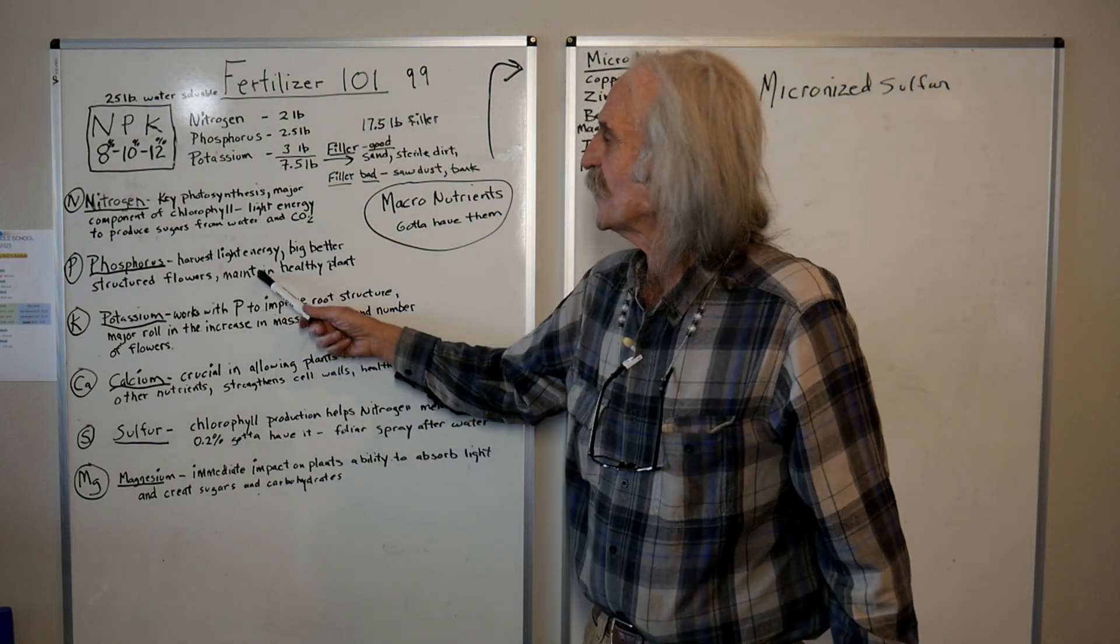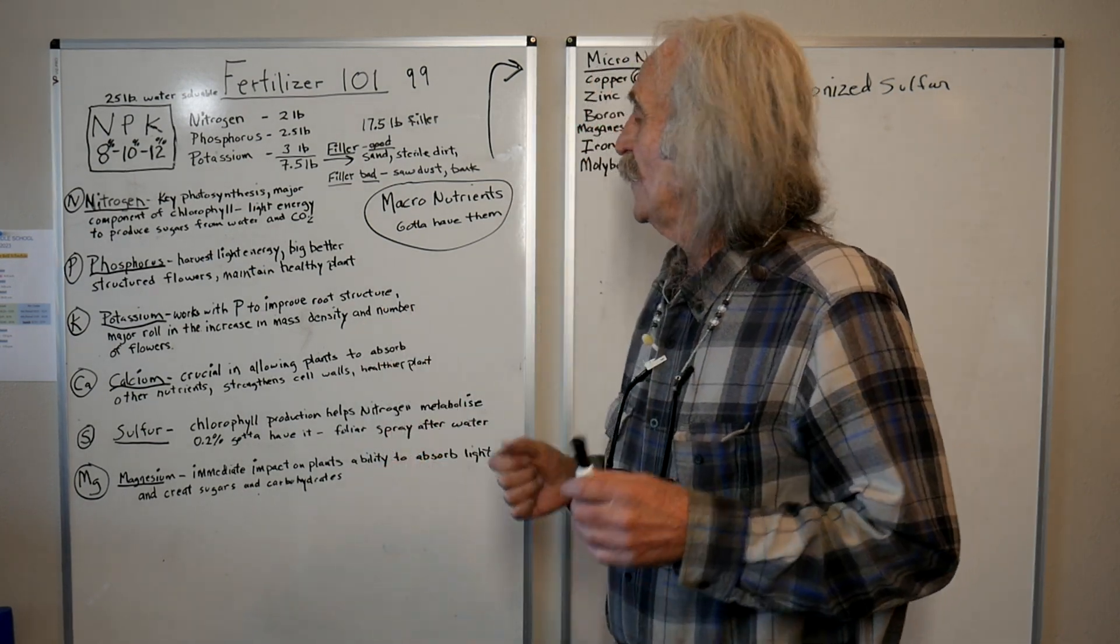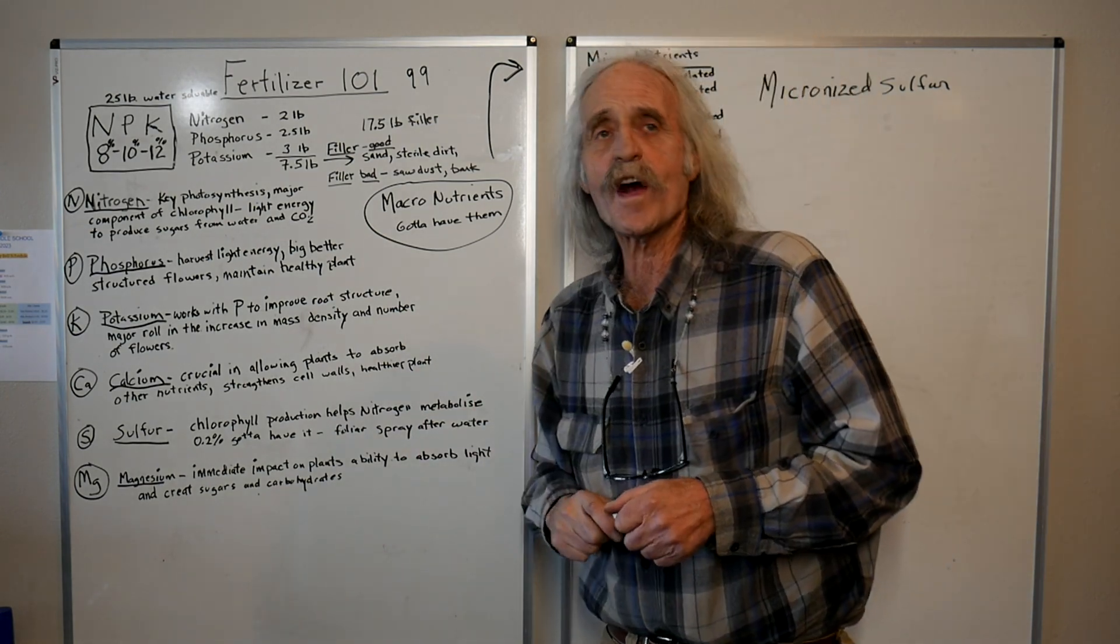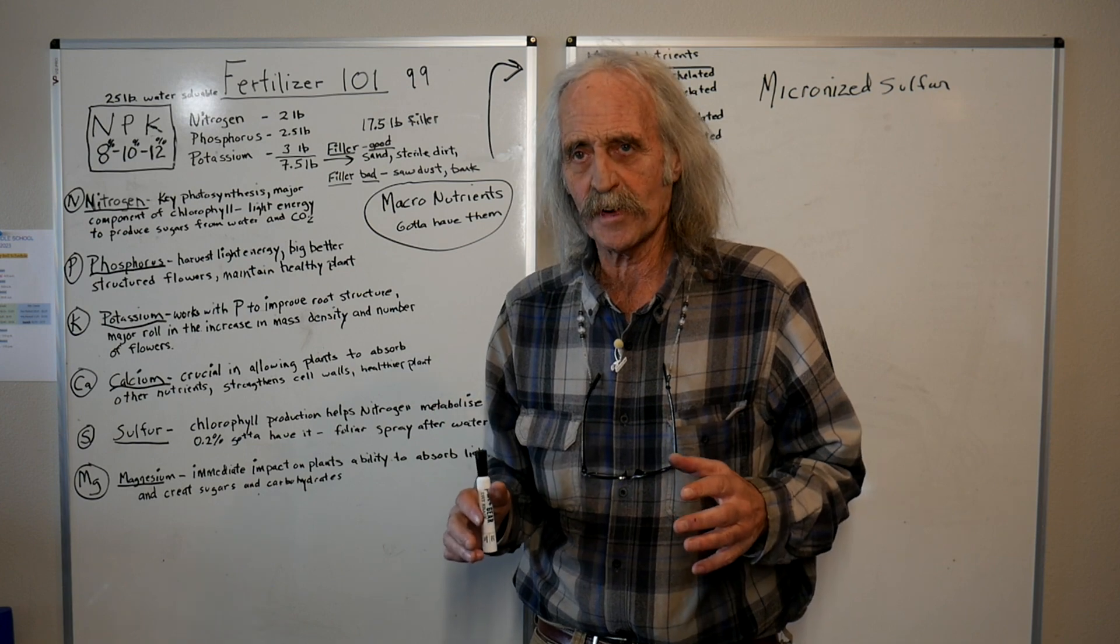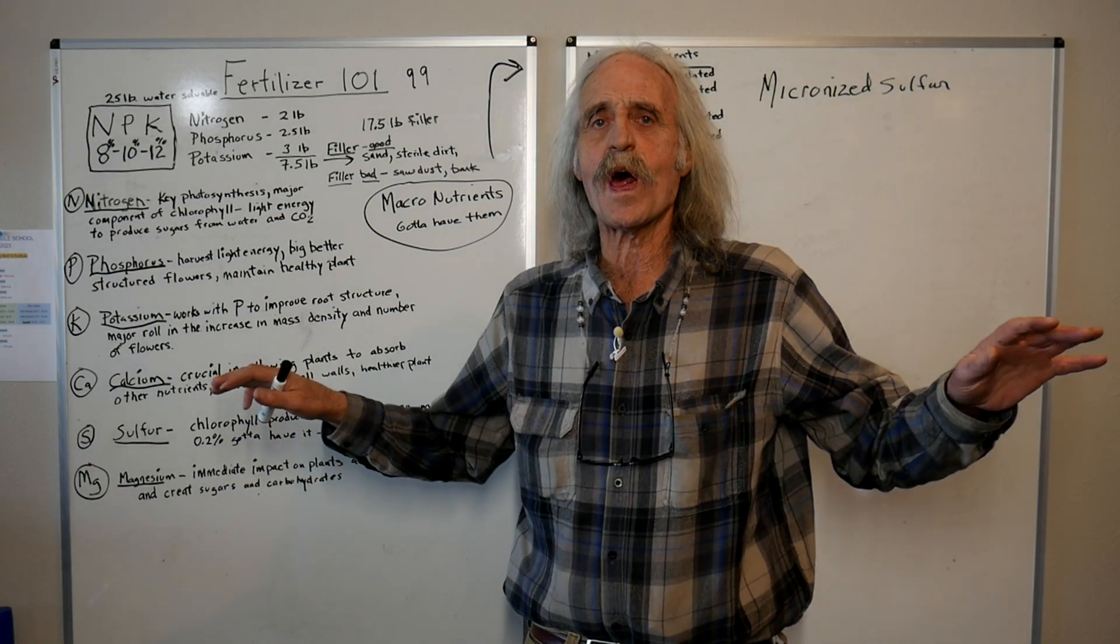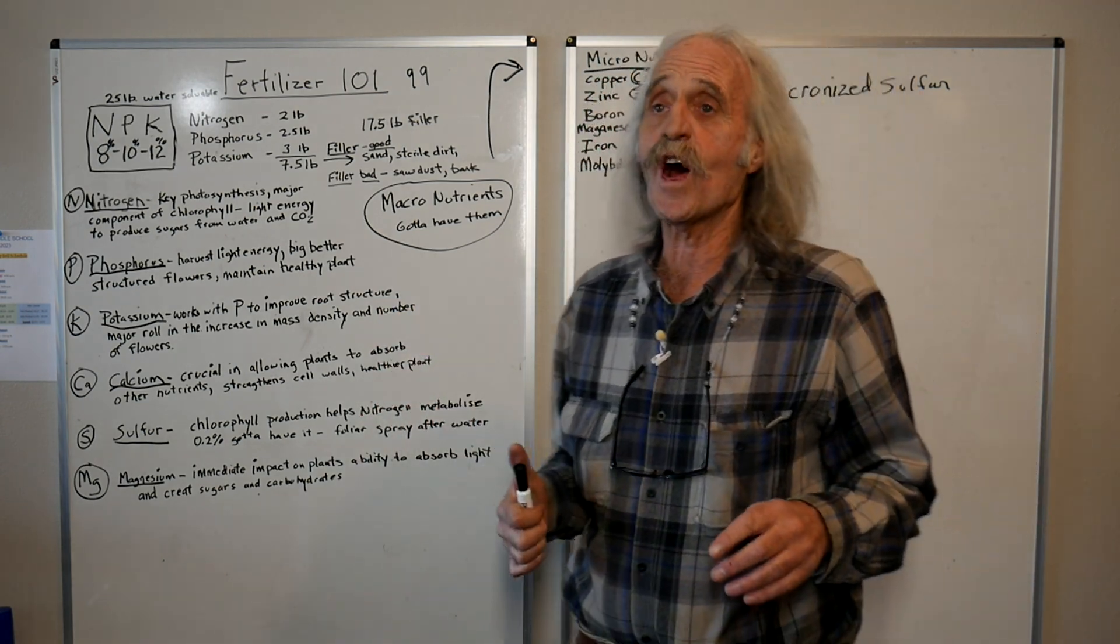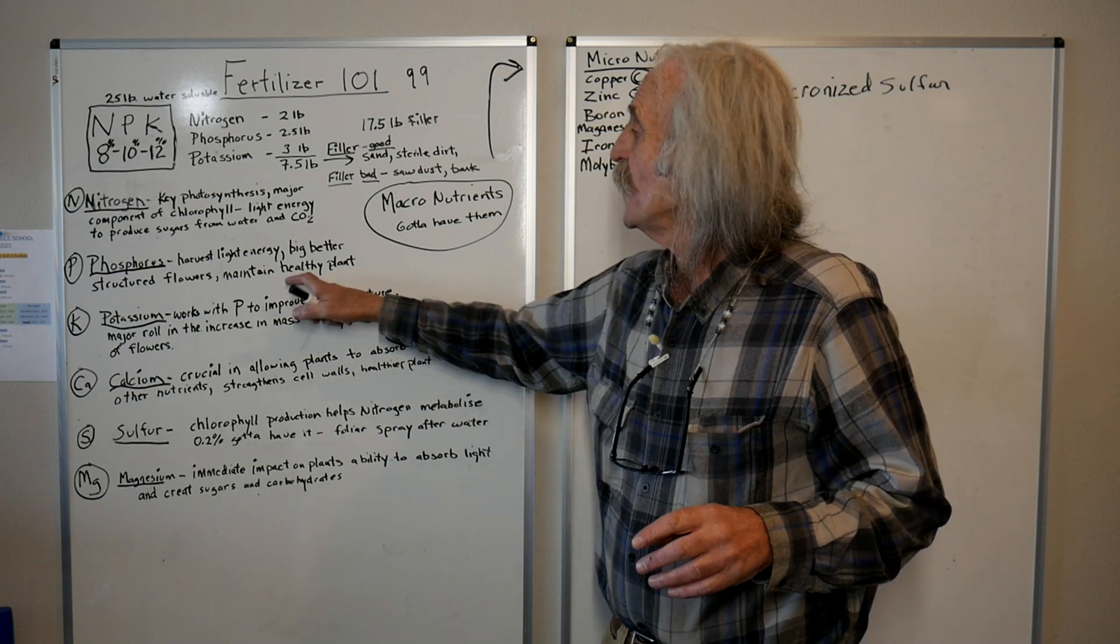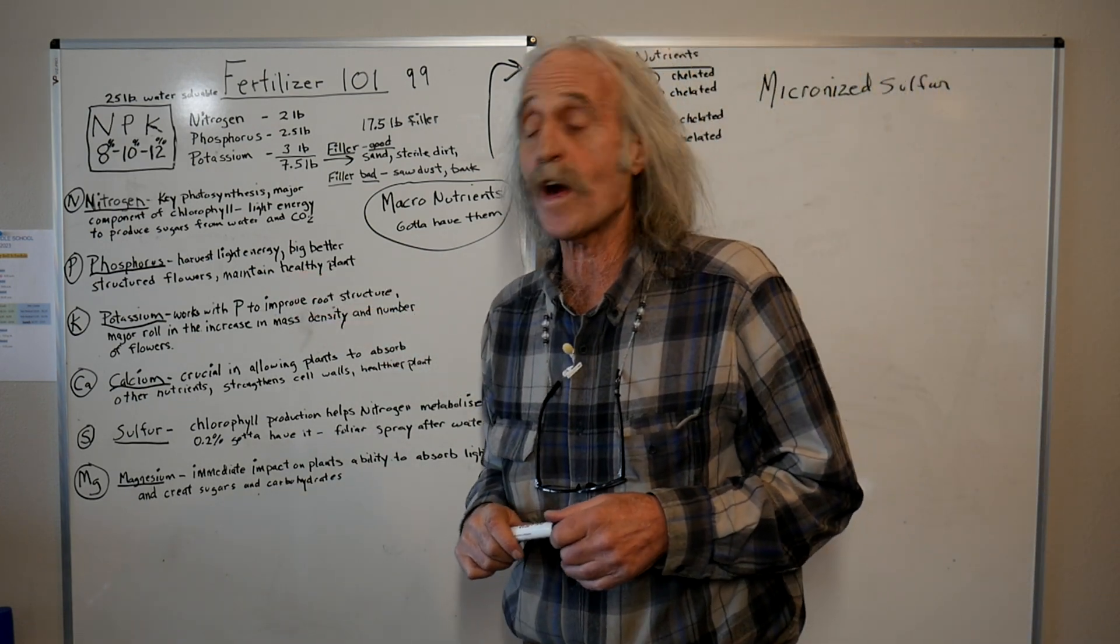Phosphorus. It also helps capture the light energy, the actual photons. Phosphorus gives you bigger flowers. I don't care what kind of flowering plant it is, you'll get bigger flowers. And it also helps maintain the cell wall and you're going to have a healthier plant if you have adequate levels of phosphorus.